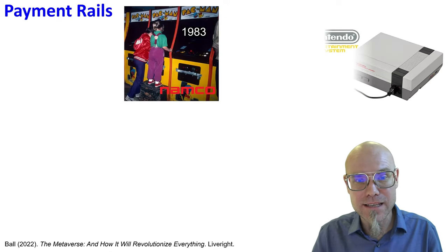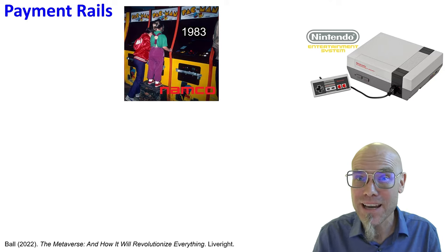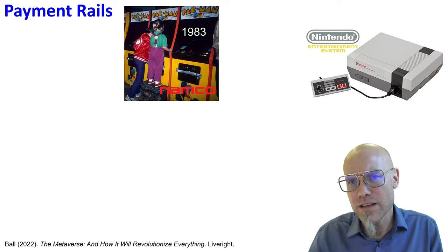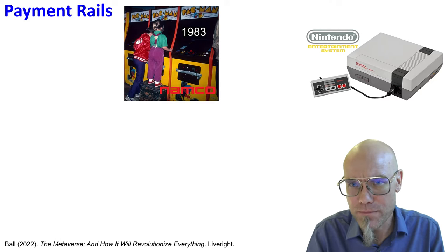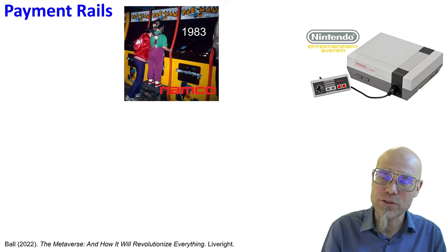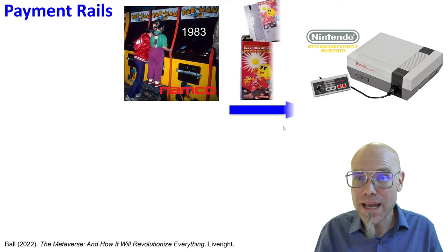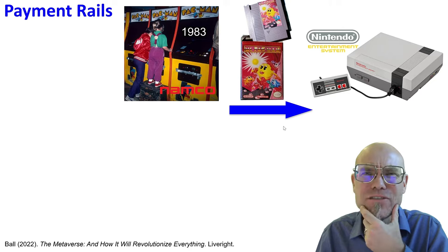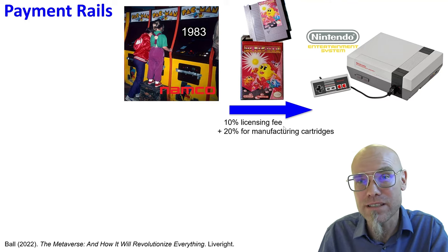The historical story of payment rails: in the 1980s, Namco was a producer of arcade games — Pac-Man, for example, which was very popular. Nintendo was not an open platform; it was hardware that produced games. When the arcade game provider approached Nintendo and said, 'Can you publish our Pac-Man game on your platform?', Nintendo said: okay, if you really want to do that, I charge you a 10% licensing fee and 20% because I have to produce these cartridges with your game on them. So they took a 30% cut.